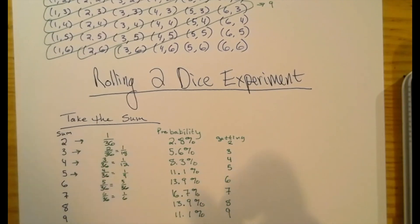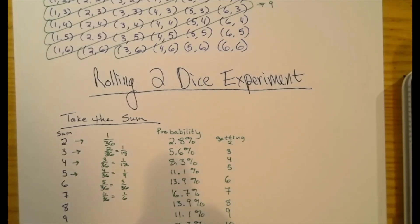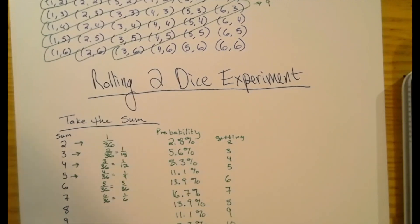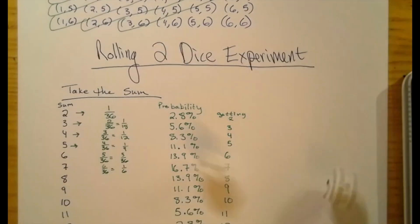Because there are 4 outcomes where you get a 9. The probability of getting a 10 is actually the same probability of getting a 4. And the probability of getting an 11 is the same as the probability of getting a 3. And the probability of getting a 12, well, there's only one outcome that gives you a 12, just like there's only one outcome that gets you a 2. So that's 2.8%. So this is what probability tells you you should get when you roll two dice.